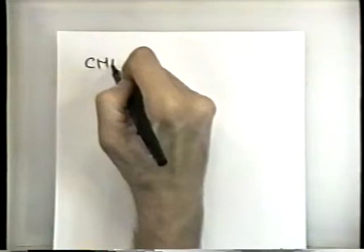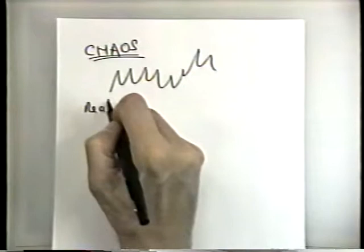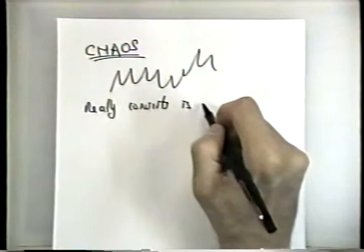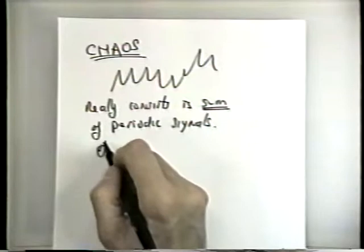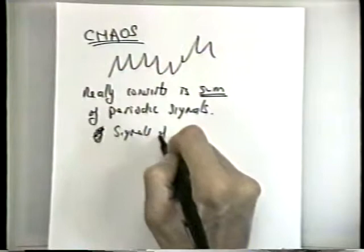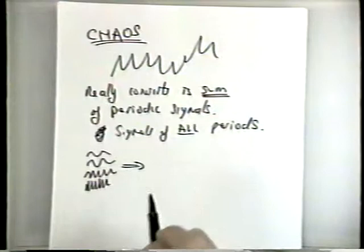What chaos means here in a technical sense: what this random signal really consists of is a sum of periodic signals, including signals of all possible periods. We have signals of different heights and frequencies, and we add them together in some combination — and that makes the chaos.